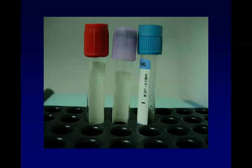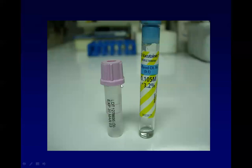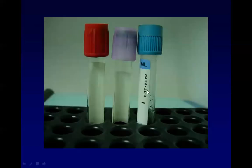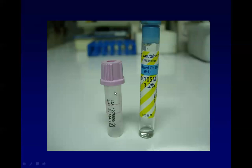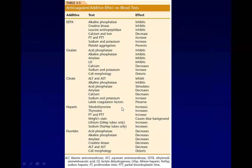The three most commonly used tubes are the red, lavender, and blue tubes. Anticoagulated tubes have a fill line indicating the limit for the amount of blood to be collected. Microtainers are used to collect blood from infants, since using standard tubes could induce anemia. The lavender microtainer also has a fill line indicating how much blood to collect.